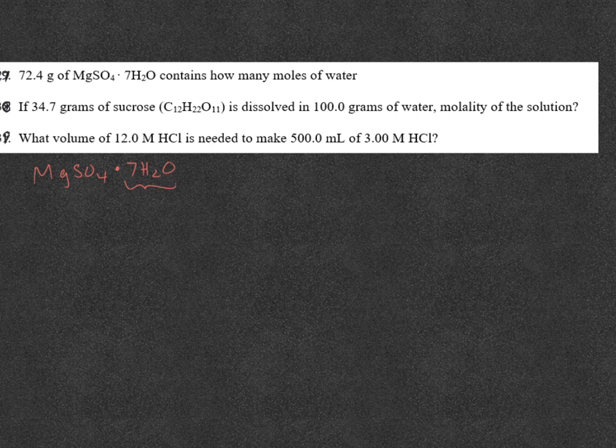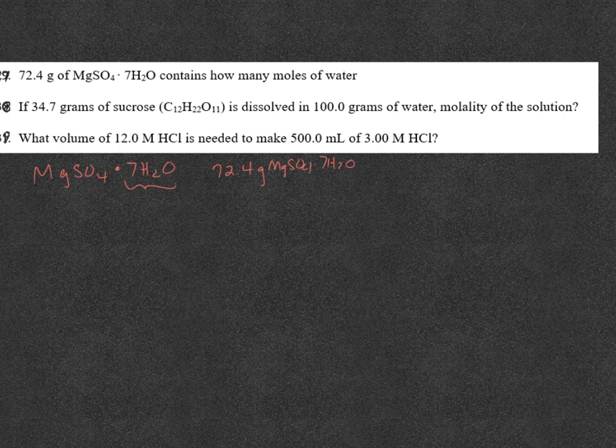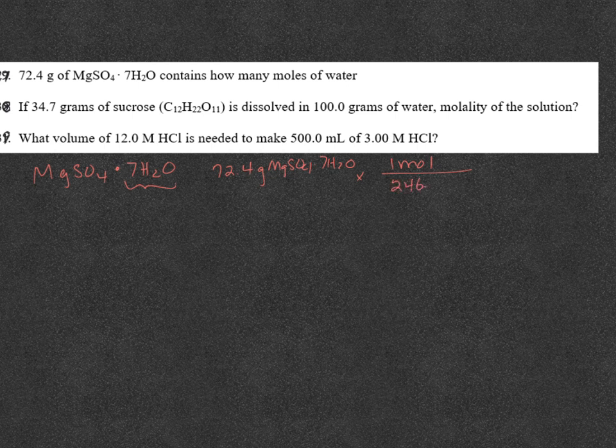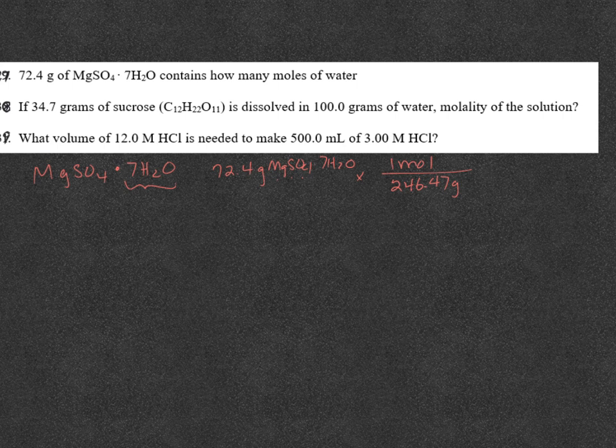Now, if I want to know how many moles of water there are, I start with 72.4 grams of the magnesium sulfate. And then I multiply times one mole over the molar mass. And the molar mass, I need to incorporate the water. So it's 246.47 grams. So you do one magnesium, one sulfate, four oxygens, 14 hydrogens, seven oxygens.